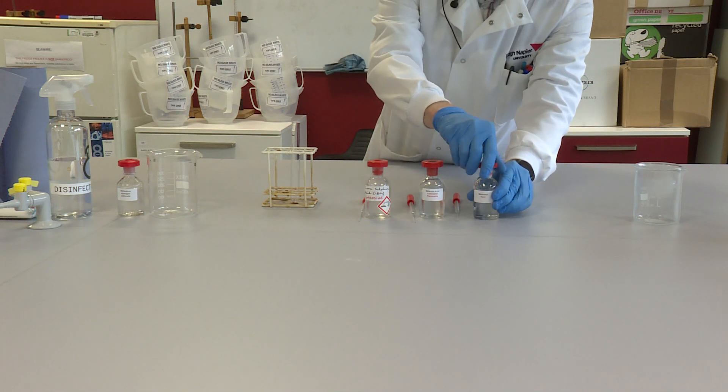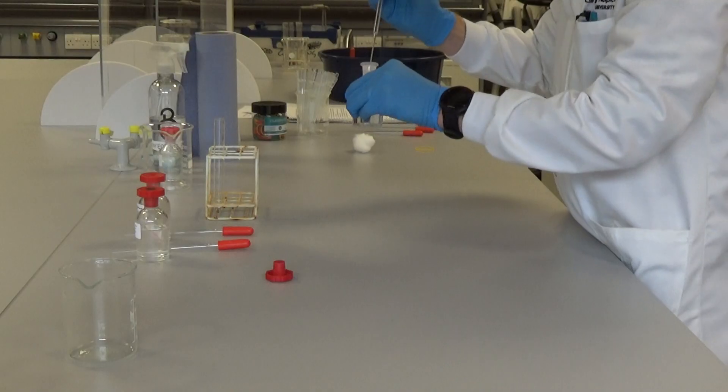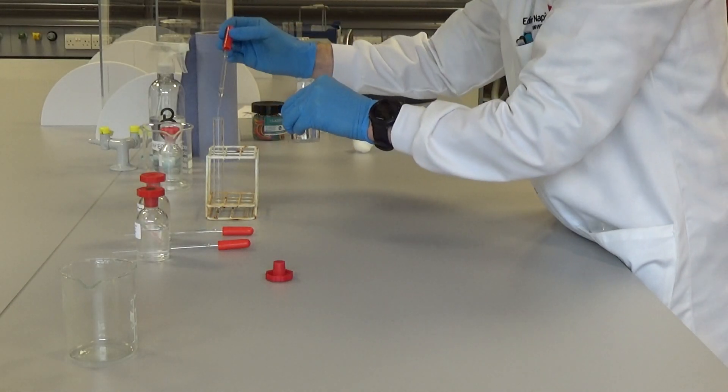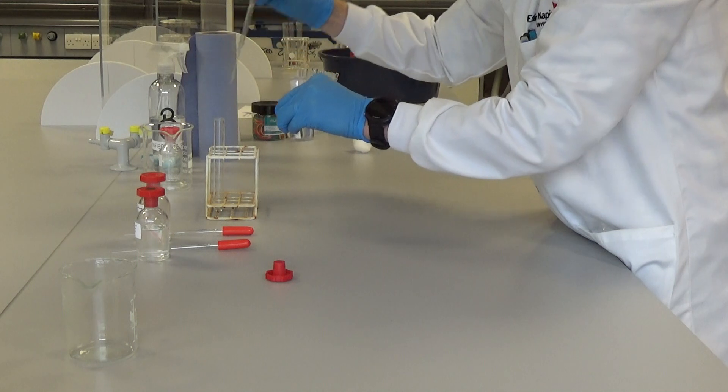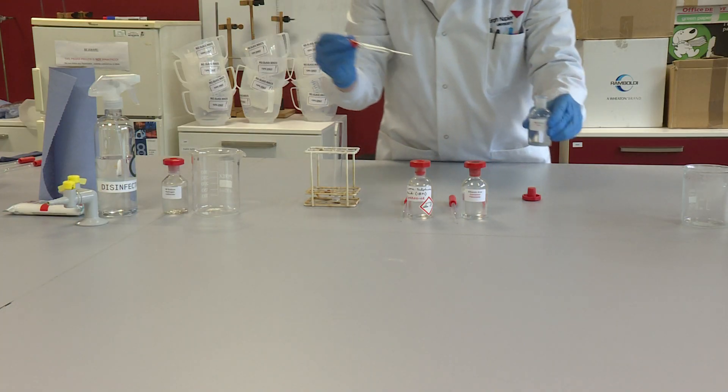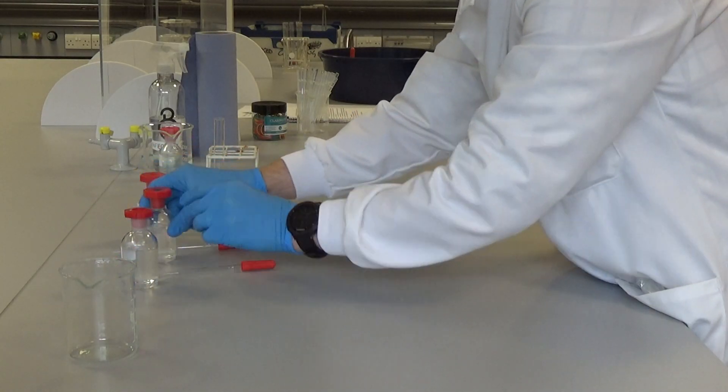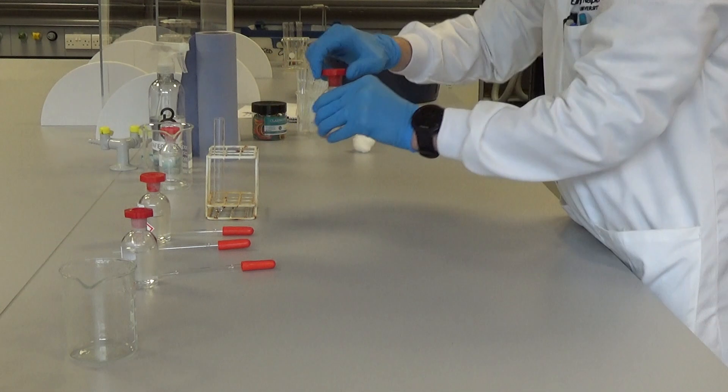I'm going to start by adding some of the alcohol, the methanol, to a test tube, approximately a depth of about one centimeter. Then I'm going to add approximately the same volume of the carboxylic acid, the ethanoic acid.